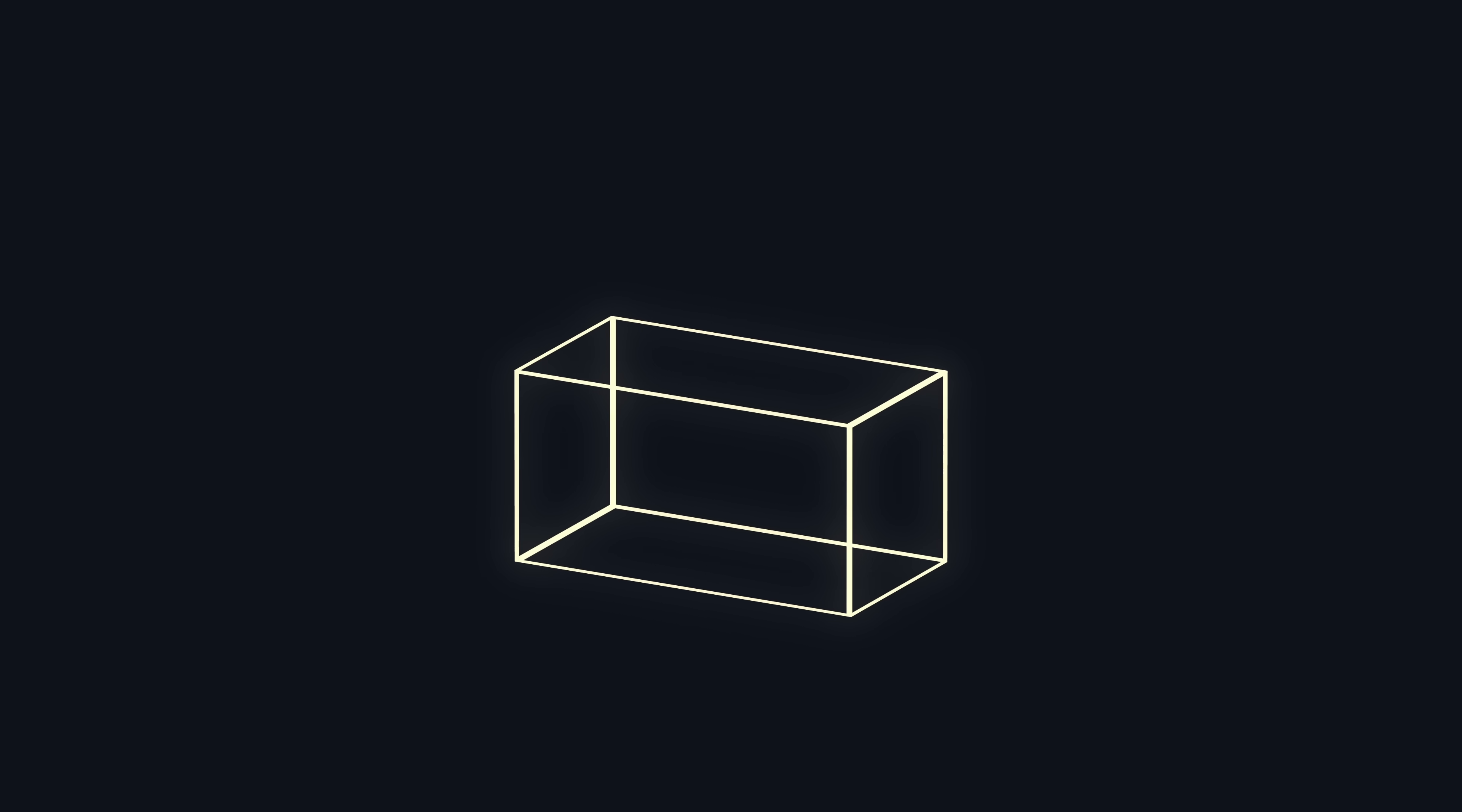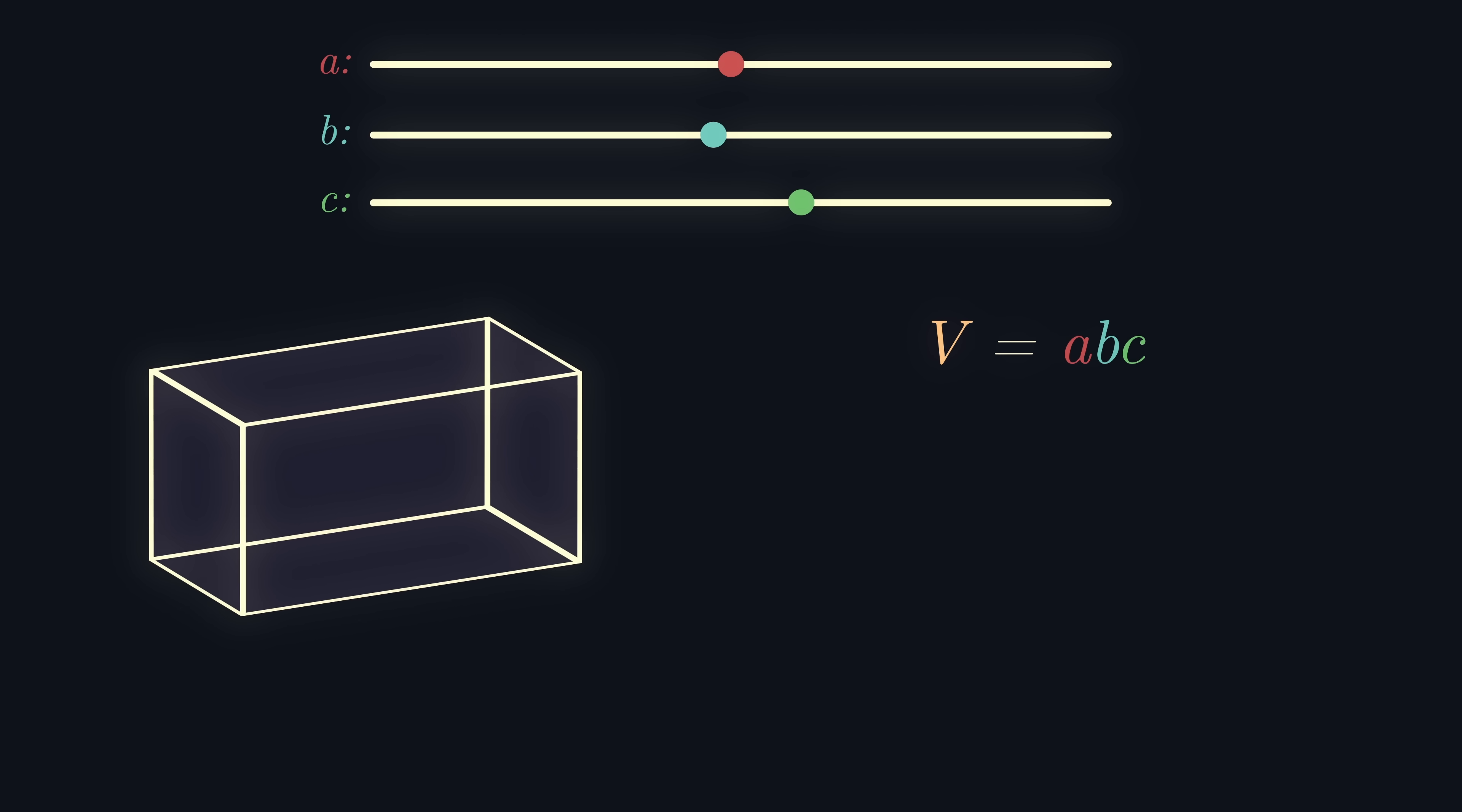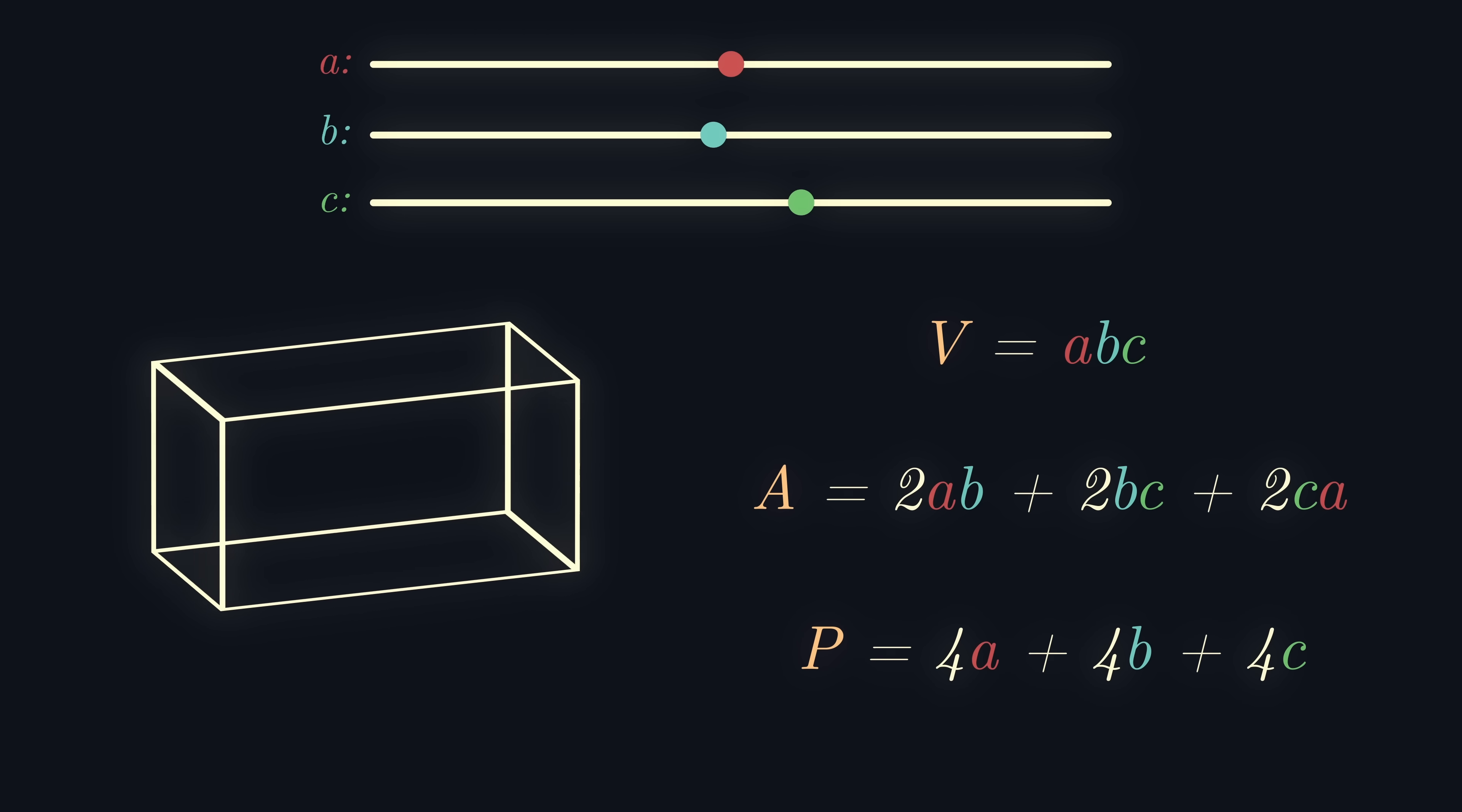Now, consider a cuboid whose edge lengths are a, b, and c. Therefore, the volume is a times b times c. The surface area is 2ab plus 2bc plus 2ca by considering the areas of each of the six rectangular faces. And the perimeter is 4a plus 4b plus 4c by considering the 12 edges of the cuboid.